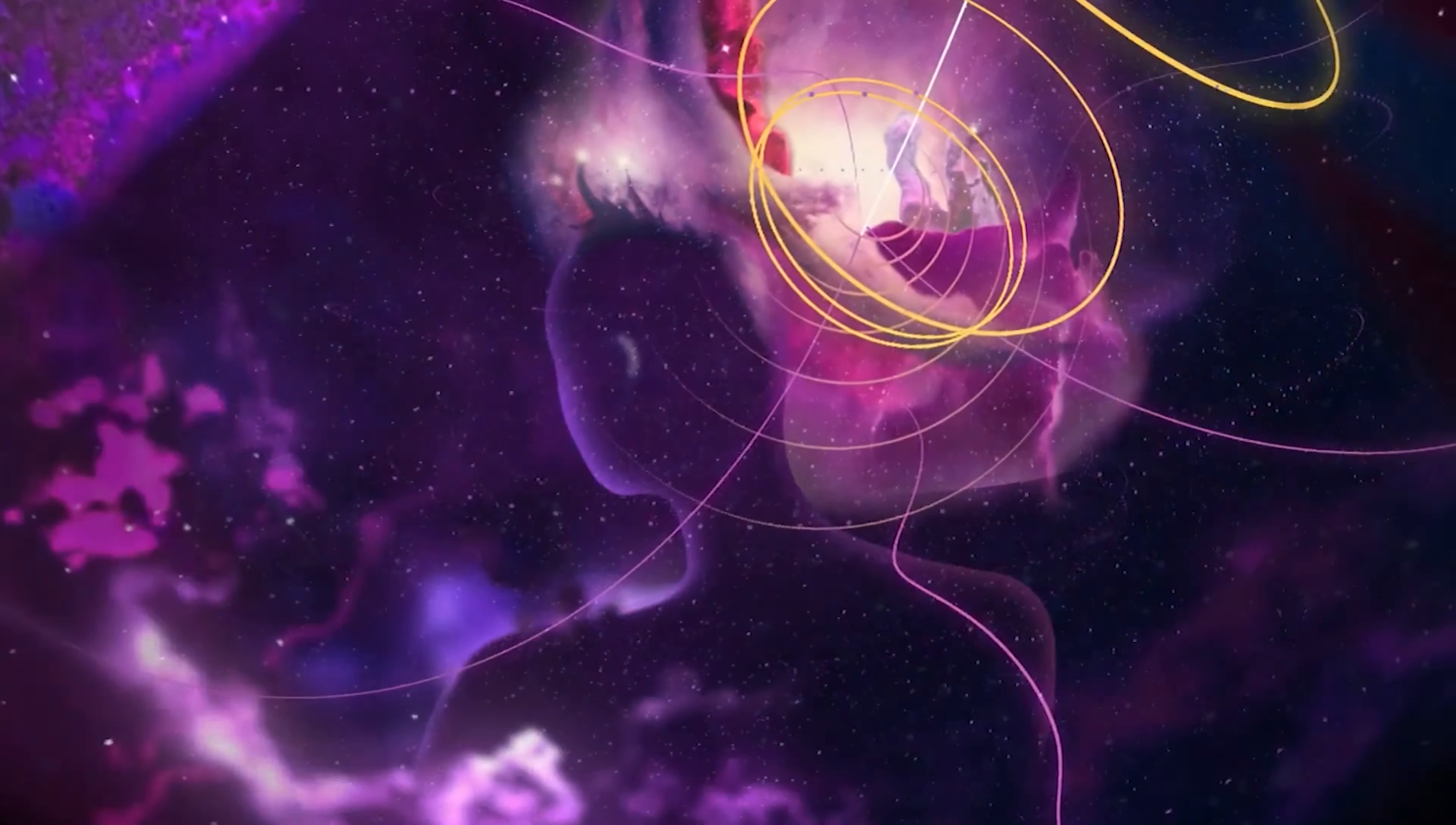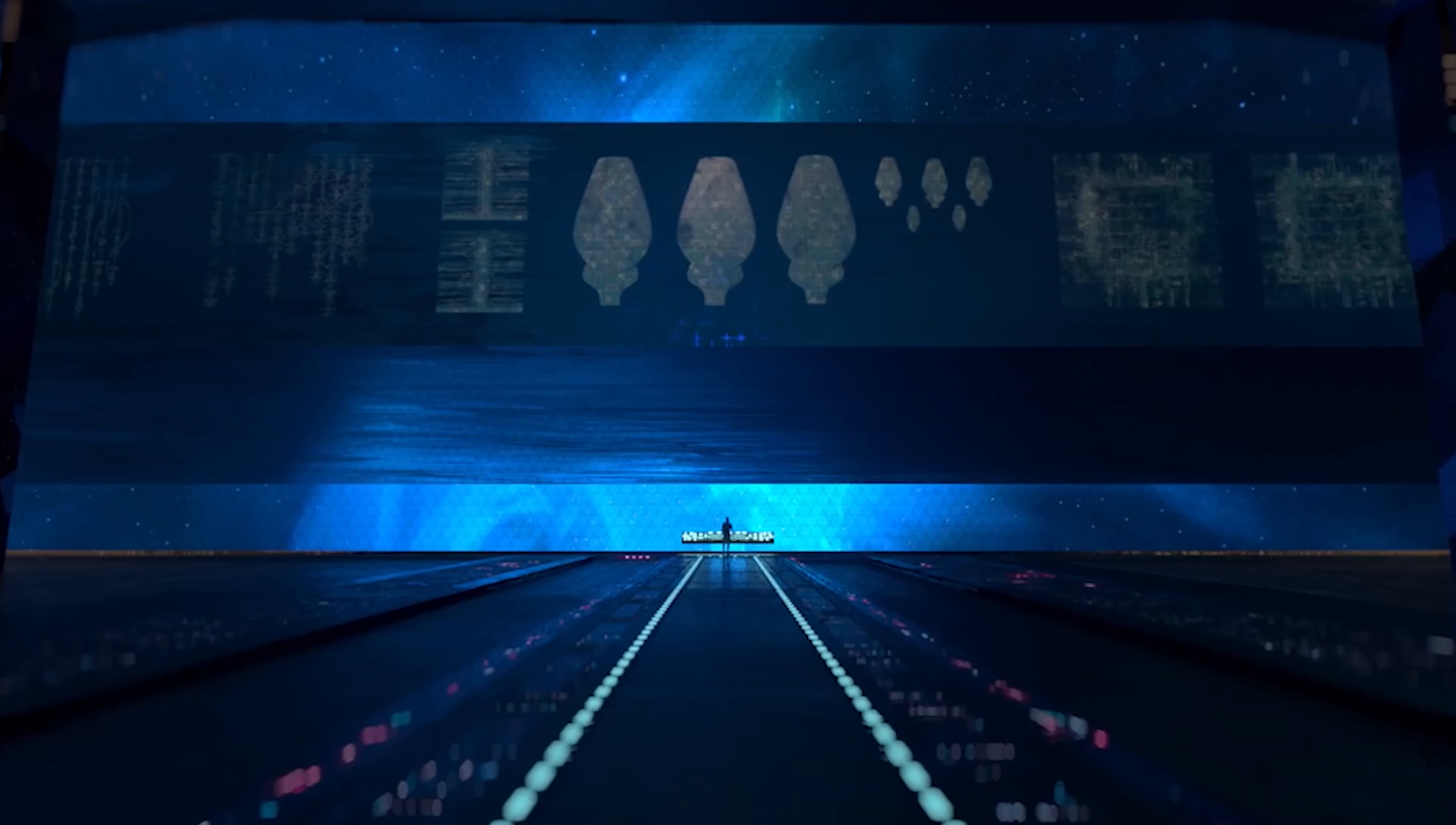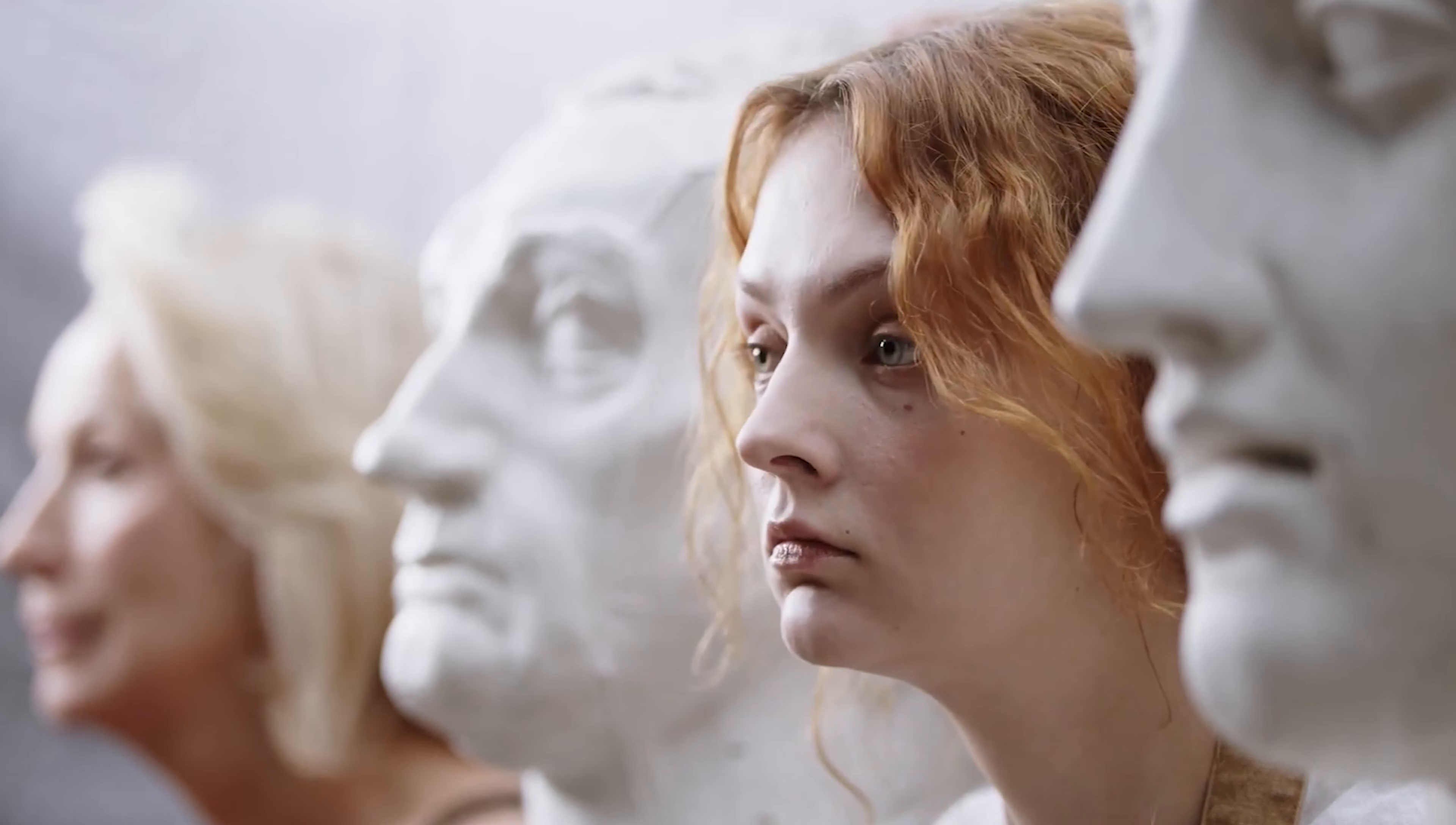For example, the novel Star Maker, already in the 1930s, depicted an extremely advanced civilization that used stars and planets as ships for intergalactic travel. Something similar was mentioned in Arthur C. Clarke's classic The City and the Stars.